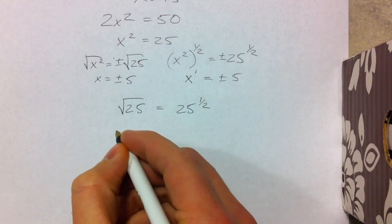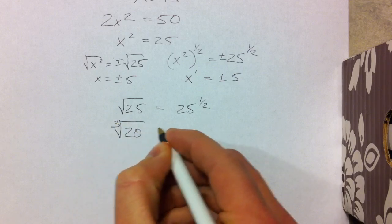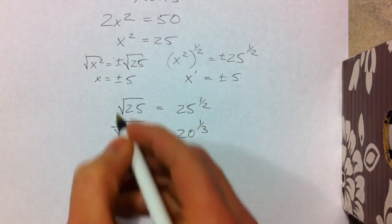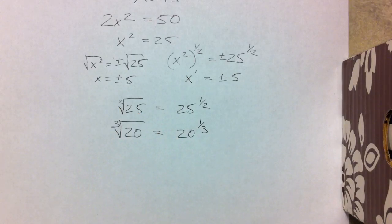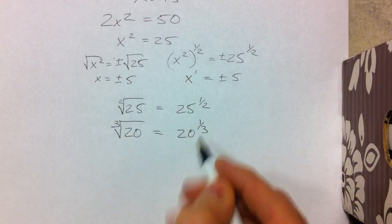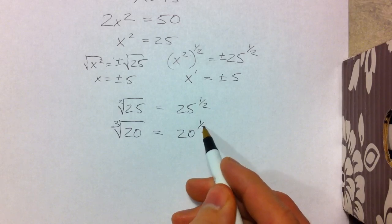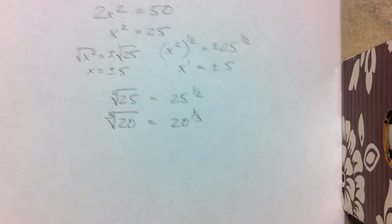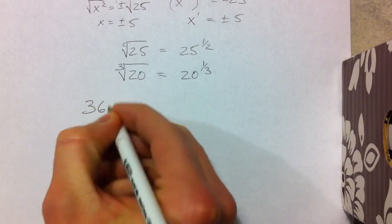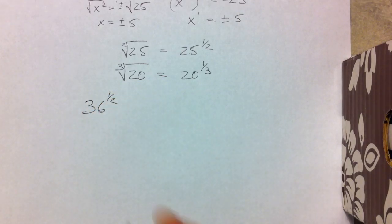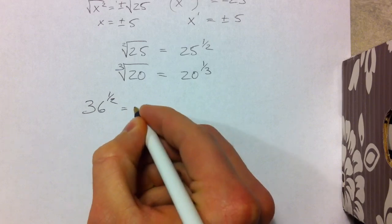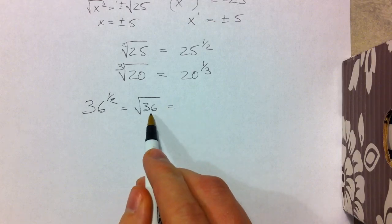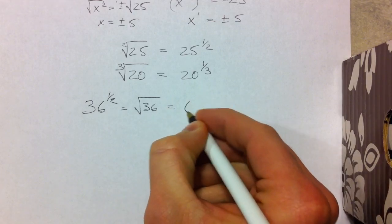In the same way, the cube root of 20 is the same as 20 to the 1/3 power. The square root has a 2 in disguise, and the cube root is the opposite of cubing something — raising to the 1/3 power is the opposite of cubing. So for example, 36 to the 1/2 power is asking you to take the square root of 36: what times itself is 36? That's 6.